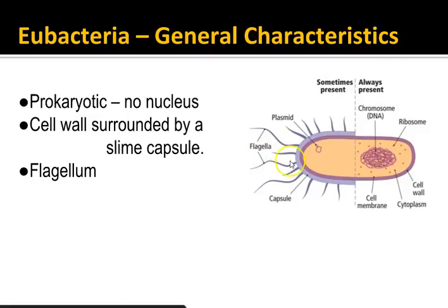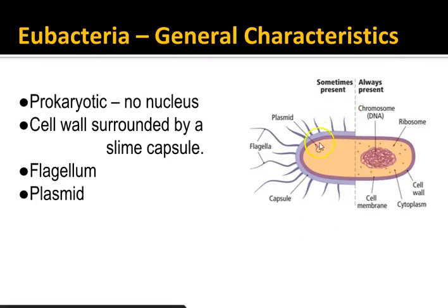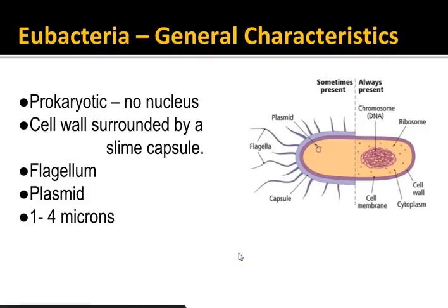Some bacteria have flagella, which allows them to move around much easier. Many bacteria also have these little tiny loops of DNA called plasmids. Second semester we might do some work with plasmids in biology, where we can actually take genes from another organism and put them into a plasmid so the bacteria can utilize that genetic information, use the ribosomes to make protein, and start doing some biotechnology.